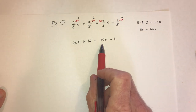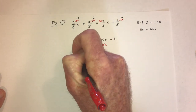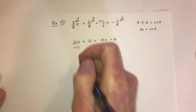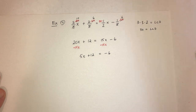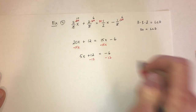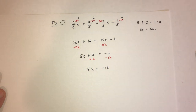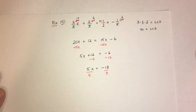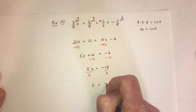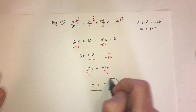Then collect all x terms on the left: subtract 15x from both sides, leaving 5x plus 12 equals negative 6. Subtract 12 from both sides: 5x equals negative 18. Finally, divide by 5. The answer is x equals negative 18 over 5, and since 5 doesn't divide into 18 evenly, you leave it as that fraction.